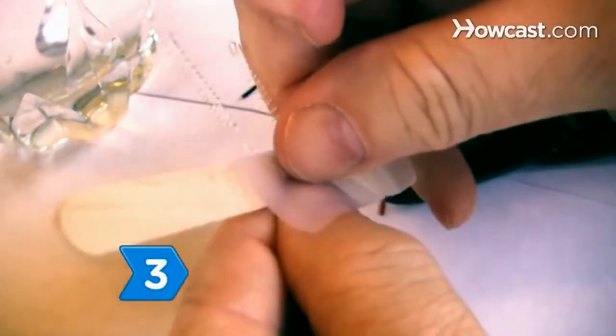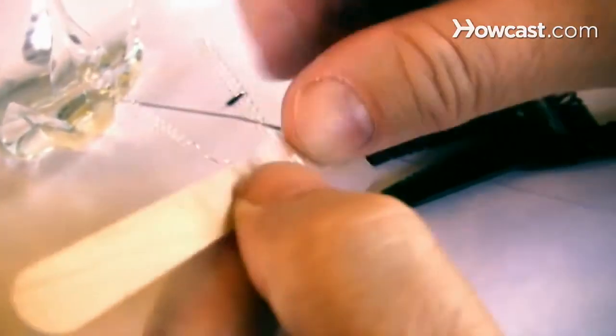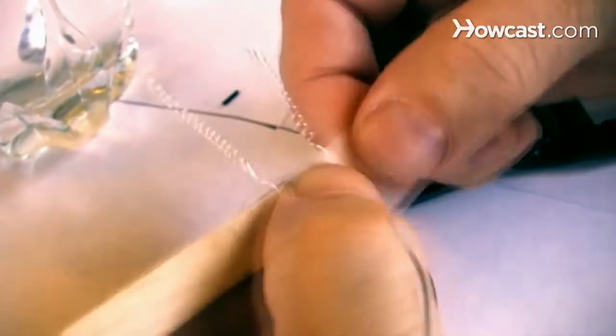Step 3. Tape both electrodes next to one another in the middle of the popsicle stick. Put the tape on the twisted leads where they meet the coil.